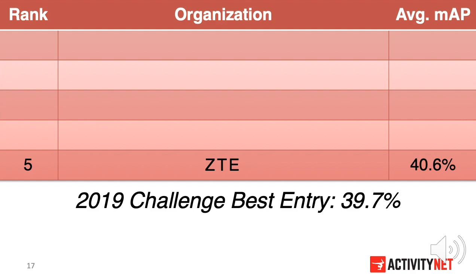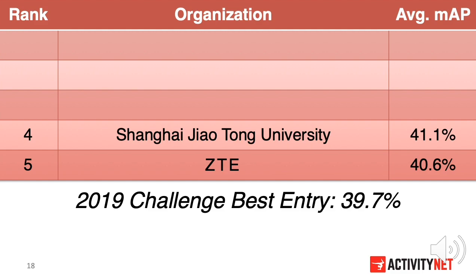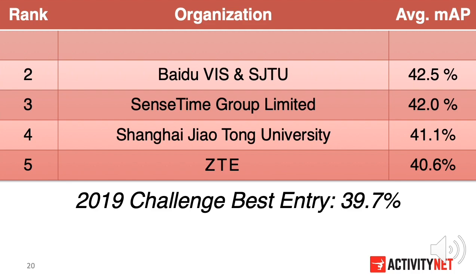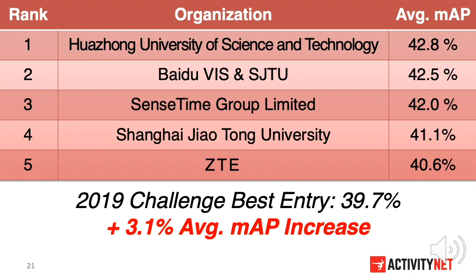The 5th team is from ZTE, Zhongxing, with an average MAP of 40.6%. The 4th team is from Shanghai Jiao Tong University, with an increment of 0.5%. The 3rd team is from SenseTime Group Limited, with an increment of 0.9% over the 4th team. The 2nd team is from the collaboration of Baidu Vis and SJTU, Shanghai Jiao Tong University, with an average MAP of 42.5%. Finally, the winning team from Huazhong University of Science and Technology reached 42.8% in the test set, and improved the best entry by 3.1% from 2019.